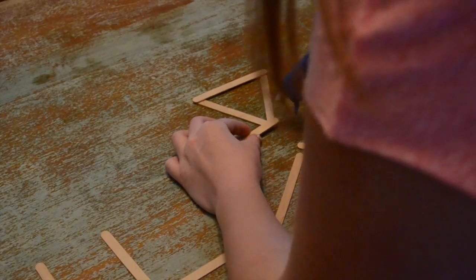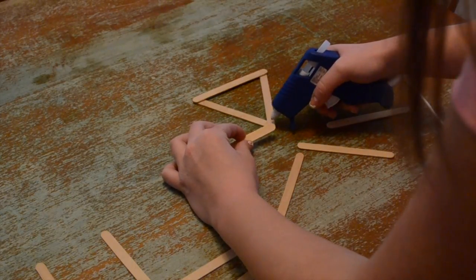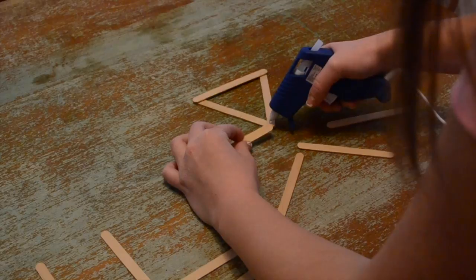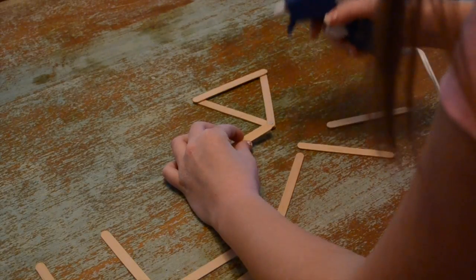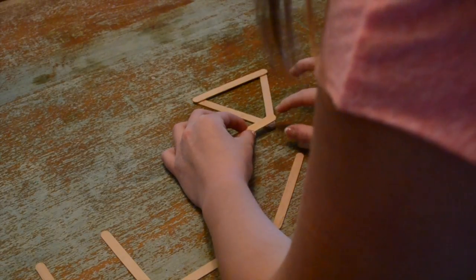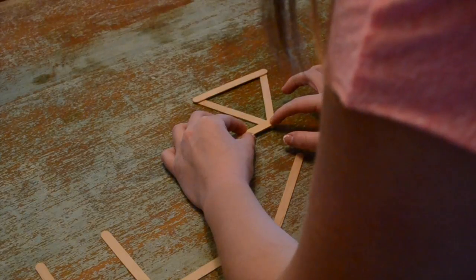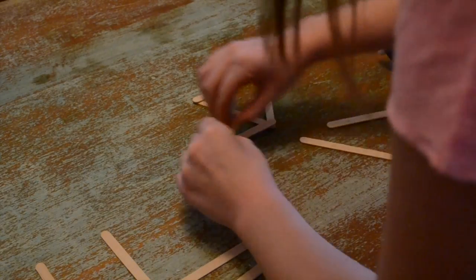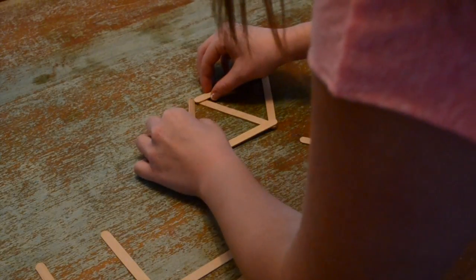You will start by making a base design for your snowflake. Mine is a hexagon, well more like six triangles, put together. And then once you have your design you will start to glue the popsicle sticks together to create the base of your snowflake.